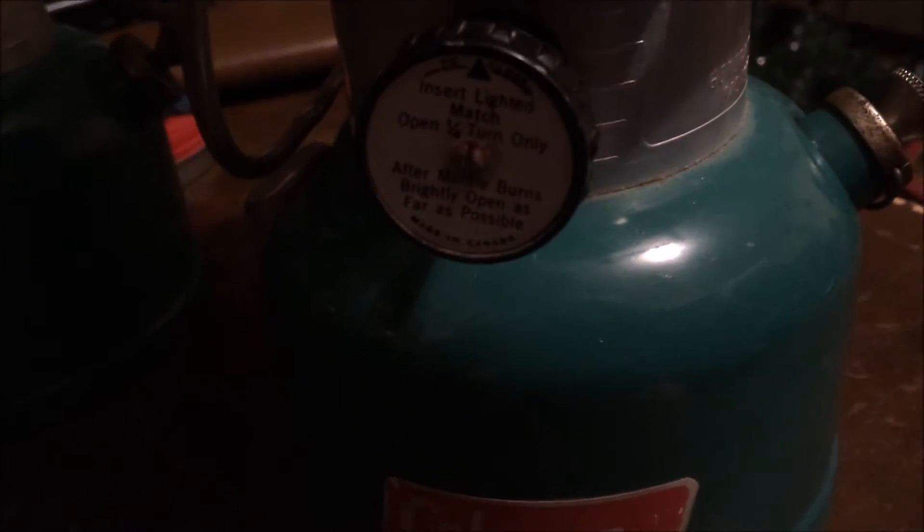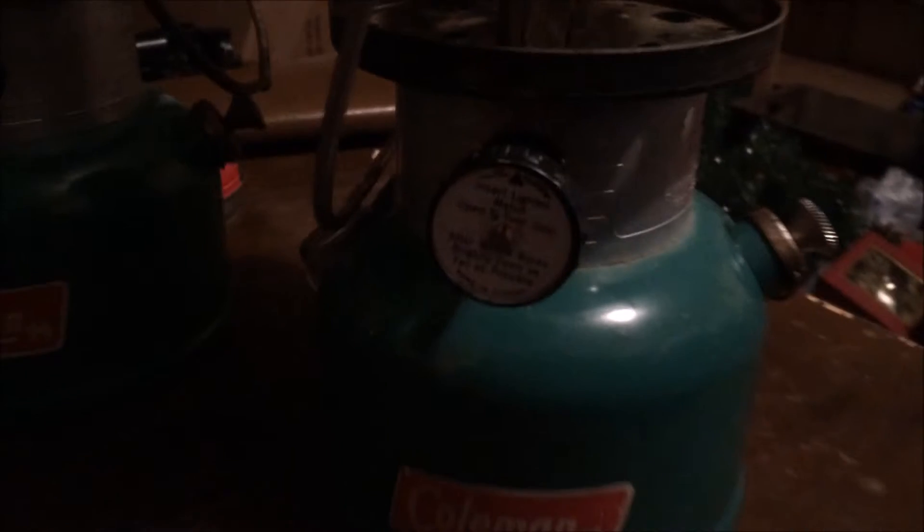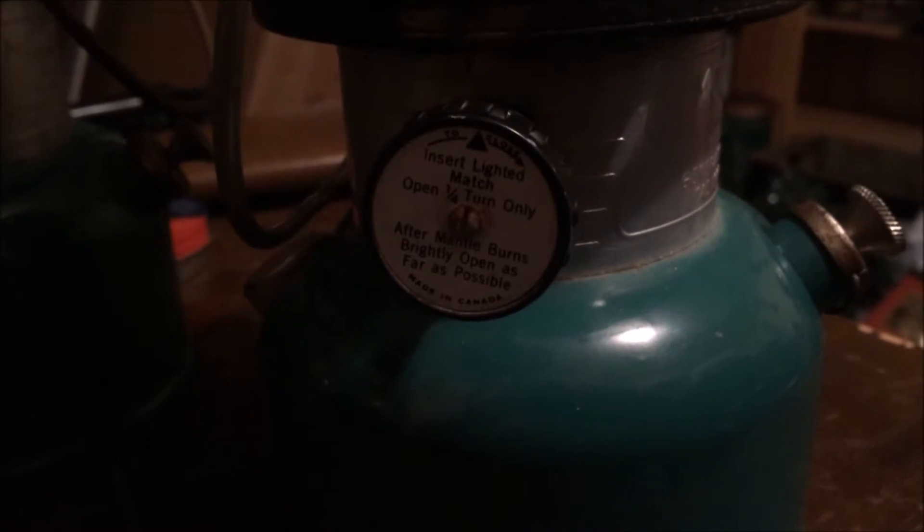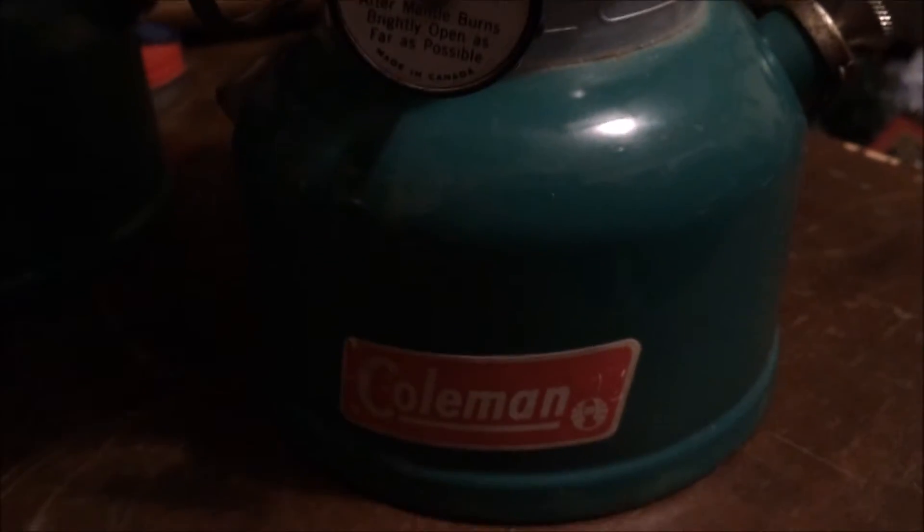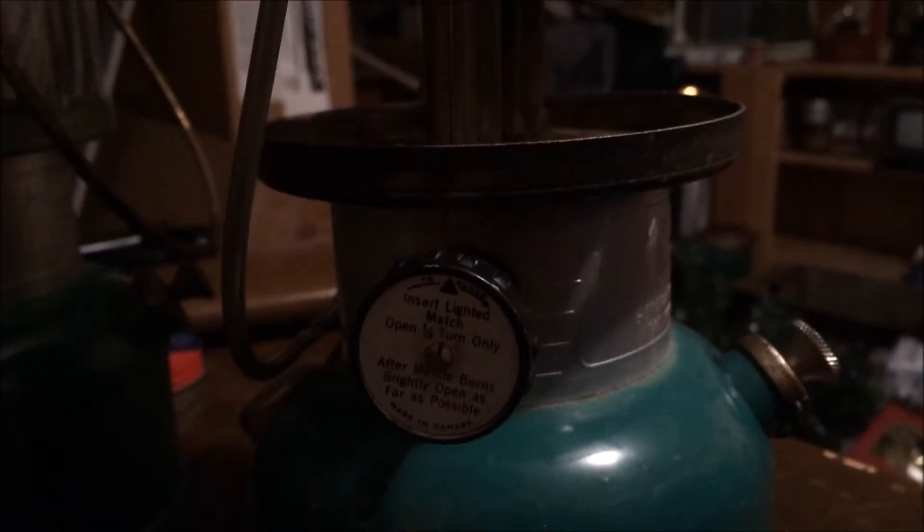Now here, I believe this is, yes it is, this is a 1976 model. You'll notice here that it has the black fuel control knob. Now all the older ones had a red fuel control knob, so this change occurred either in late 1975 or early 1976. Aside from that, again, exact same lantern, no real noticeable difference.